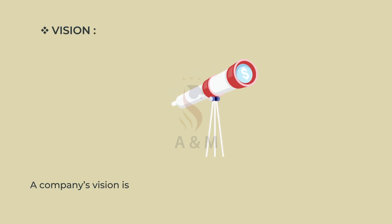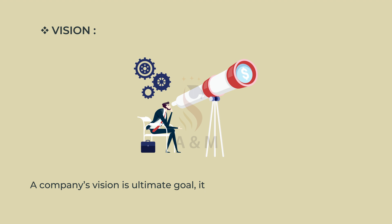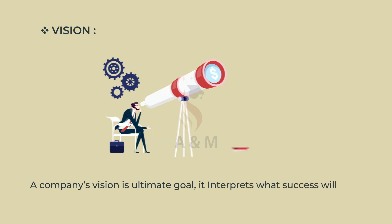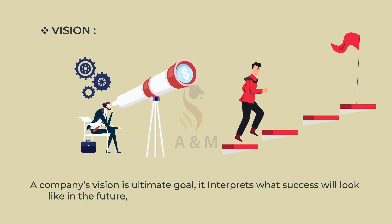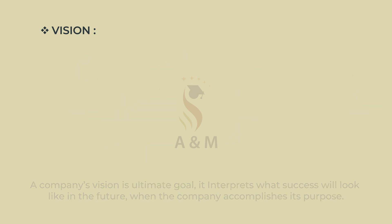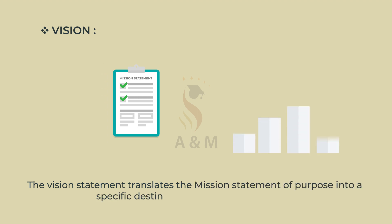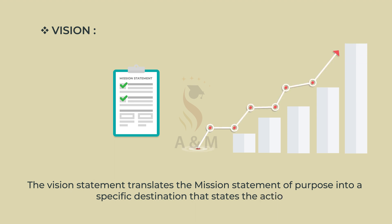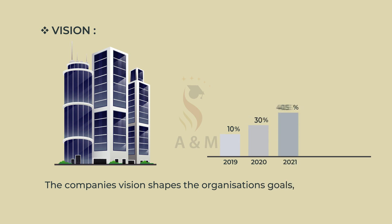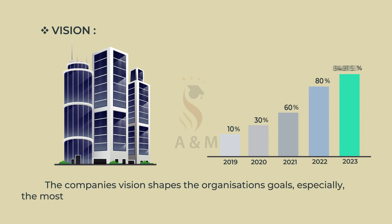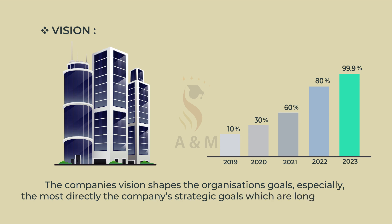A company's vision is its ultimate goal. It interprets what success will look like in the future when the company accomplishes its purpose. The mission statement translates the purpose into a specific destination that states the actions. The company's vision shapes the organization's goals, especially the company's strategic goals, which are long-term aims.